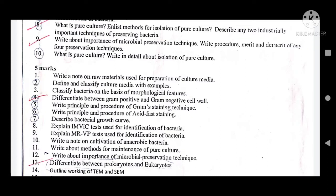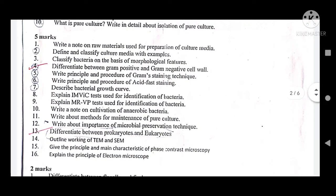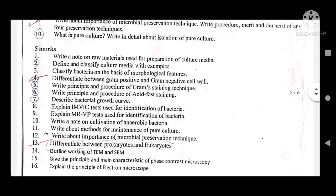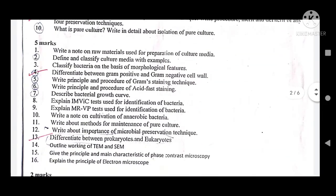For the ninth question, write the importance, procedure, merits and demerits, and advantages and disadvantages of any four preservative techniques. The tenth and last question: what is pure culture? Write in detail about the isolation of pure culture — a very important question. Now let's move to the five-mark questions.